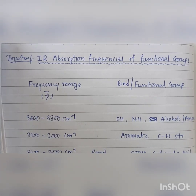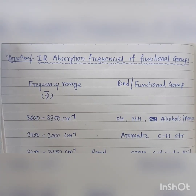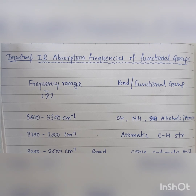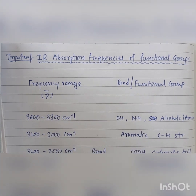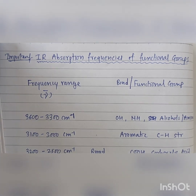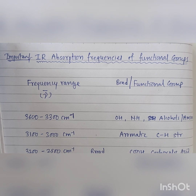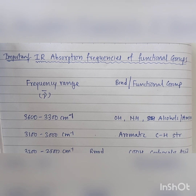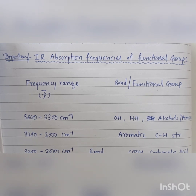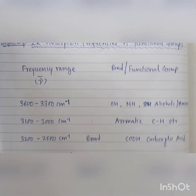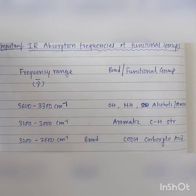Dear students, now we will see some of the important IR absorption frequencies of functional groups. Depending upon the strength of the bond, the IR frequency changes — that is, the nu bar value changes. Stronger the bond, higher will be the nu bar value. So depending on the strength of the bond, we can have different IR frequency ranges. There are some important functional groups which can be identified on the basis of nu bar values.